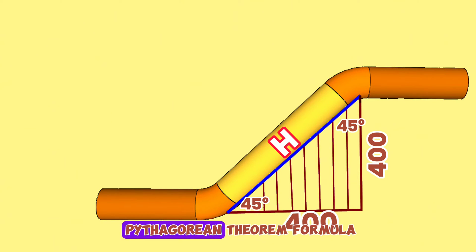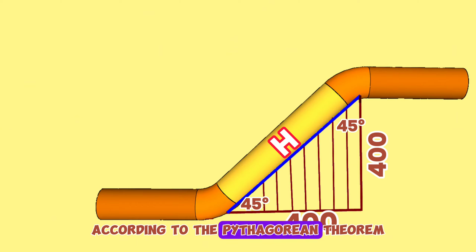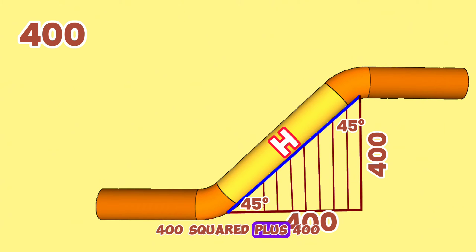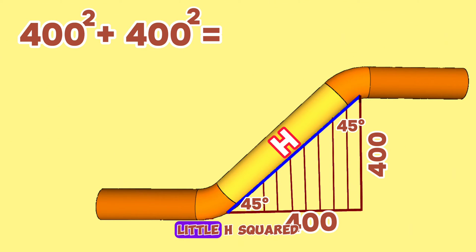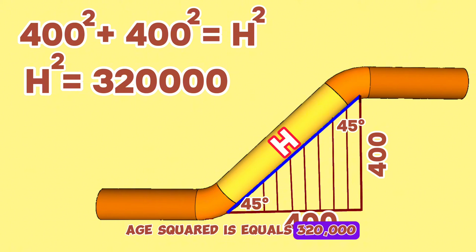We will use the Pythagorean theorem formula to calculate the hypotenuse of this right triangle. According to the Pythagorean theorem, 400 squared plus 400 squared equals H squared. Continuing the calculation, H squared equals 320,000.